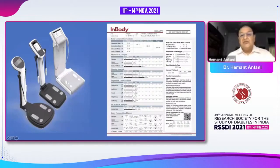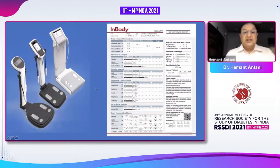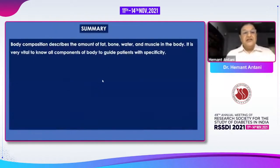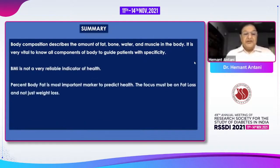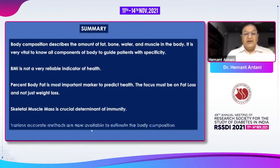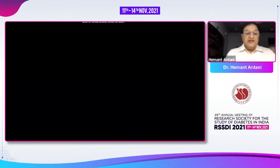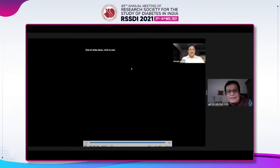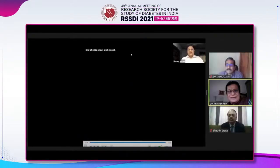These methods allow a complete analysis, and there is a very extensive report available on the right side showing many conclusions based on all the points discussed. To summarize: body composition describes the amount of fat, bone, water and muscle in the body. BMI is not a very reliable indicator of health; percentage body fat is the most important marker to predict health. The focus must be on fat loss and not just weight loss. Skeletal muscle mass is crucial to determine immunity. Various accurate methods are now available to estimate body composition. Thank you very much for your patient listening, and thank you Dr. Bansi Savu for giving me the opportunity to record this presentation.